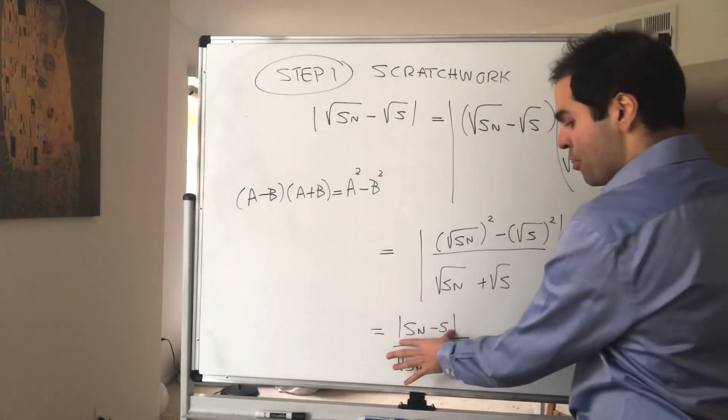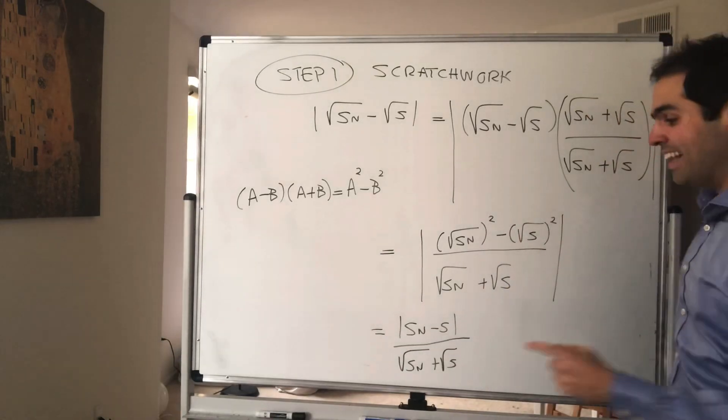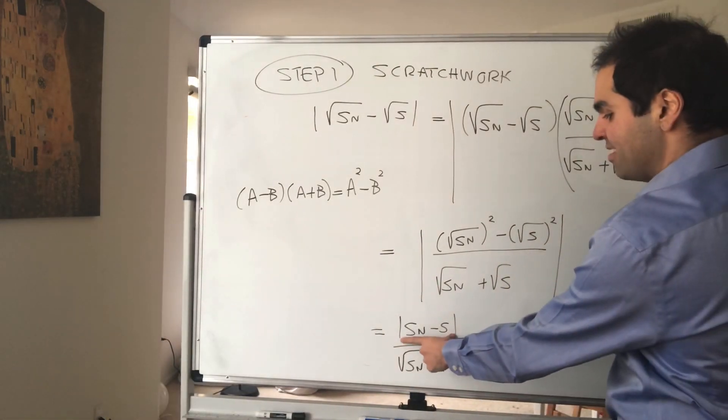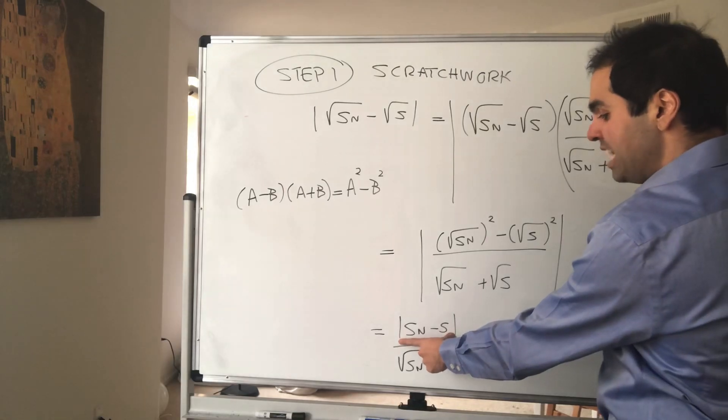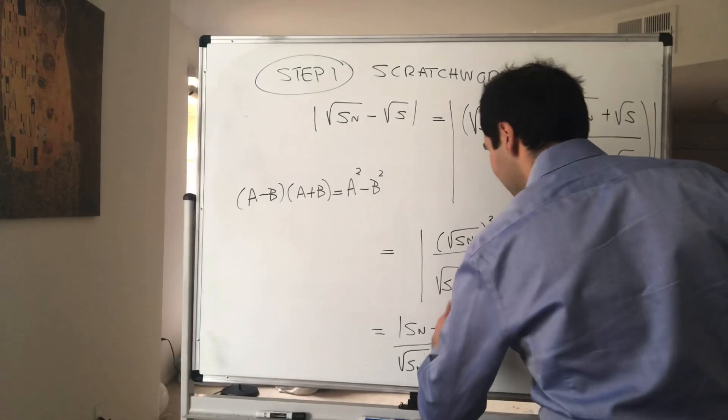Now remember there's one assumption we haven't used yet. We have not used the assumption that Sn converges to s. So actually what we know is that this number here is actually small if we pick n large enough.